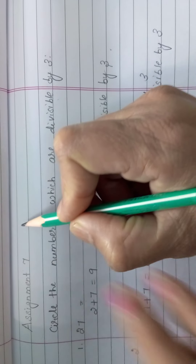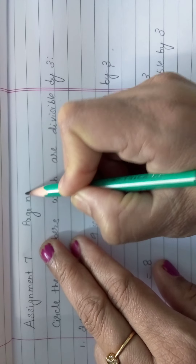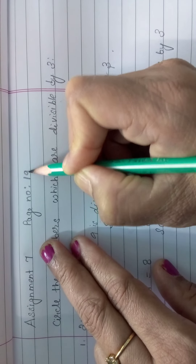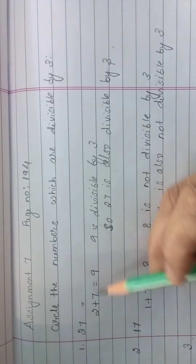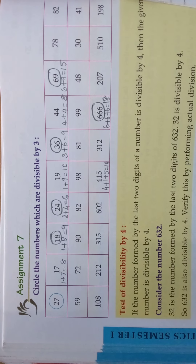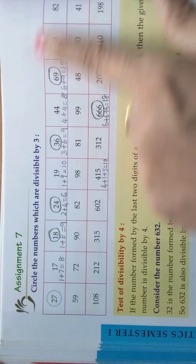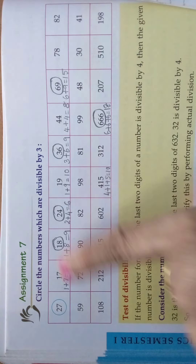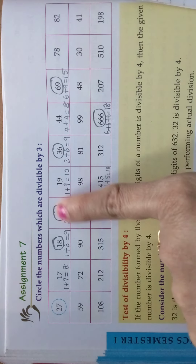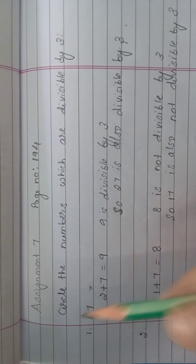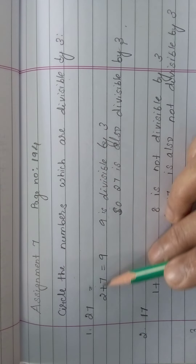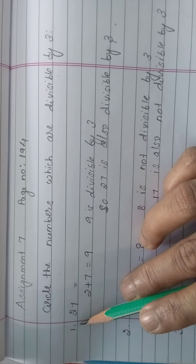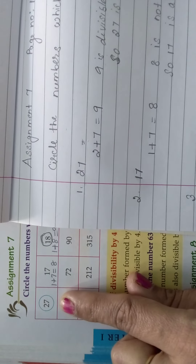This assignment 7 is on page number 194. Look here — this is assignment 7, page number 194. Here it is given like this, so you cannot get the space to do whether the number is divisible by 3 or not. So what you should do — you should do it in your classwork like this. Write assignment 7, write the heading, and take each and every number. See here, first number: 27.